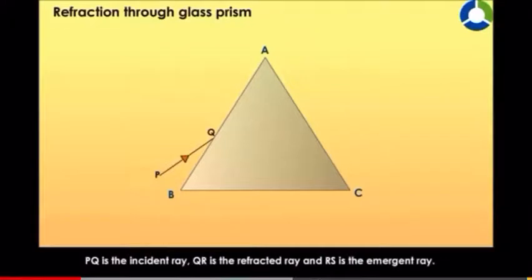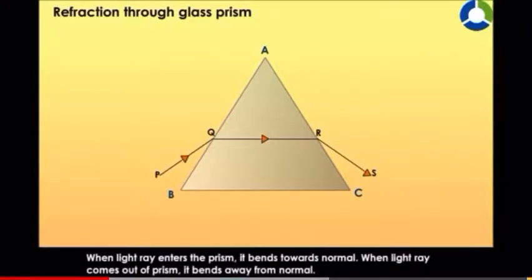PQ is the incident ray, QR is the refracted ray, and RS is the emergent ray. When light ray enters the prism,